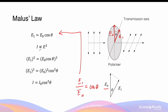We also know that the intensity of light is directly proportional to the square of its electric field vector. So by squaring both sides of the equation, we can obtain an expression in terms of the intensity of the final and original light sources. This equation is what we call Malus's law: I equals I0 times cos squared theta.